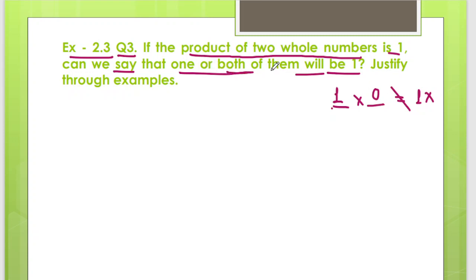But can we say that both of them will be 1? Yes, we can say. Because if we multiply 1 into 1, then our answer is 1. So our answer would be that this is only true when both of them are 1.